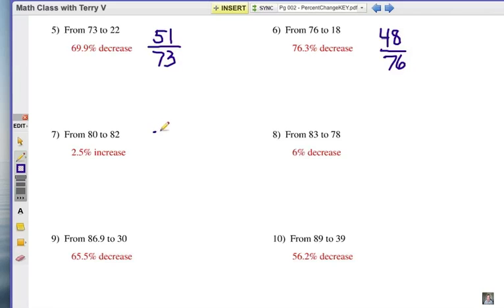In number 7, obviously, you went up by 2, and you're going to divide that by the 80, 2 divided by 80. Divide it out and move your decimal, 2.5 percent increase.